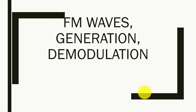In that method, there were a few steps. First, we produced a narrow-band frequency modulated wave and then step by step we increased its frequency by using a frequency multiplier, until we got our required waveform. Today, we will also study methods of generation of FM waves and a method for demodulation of FM waves.